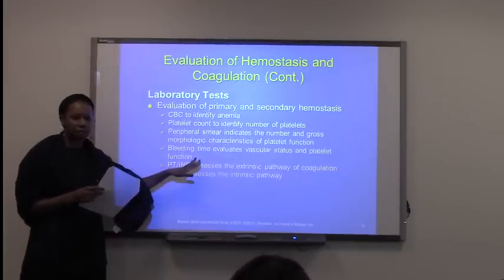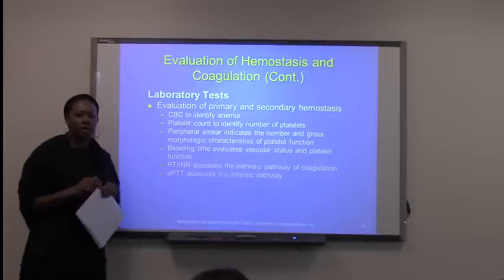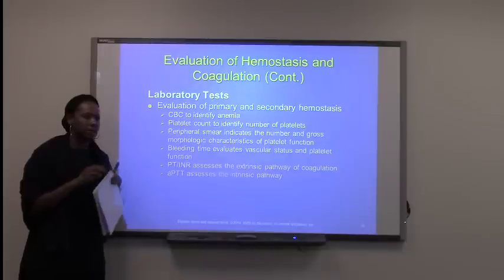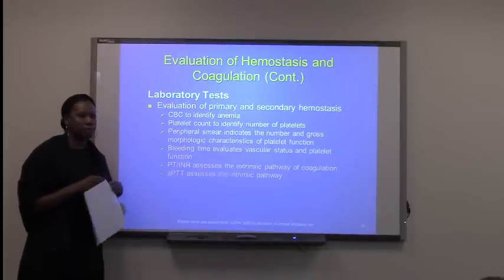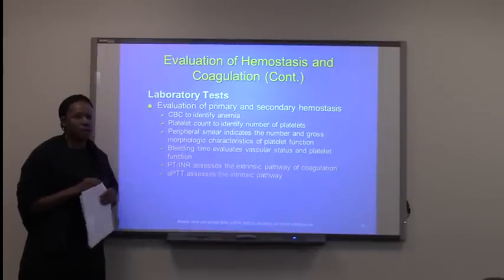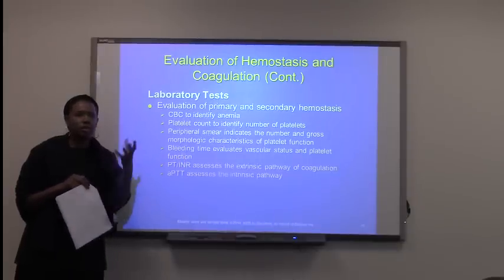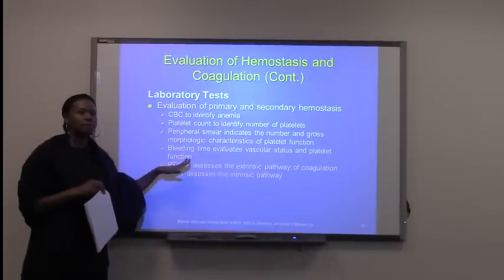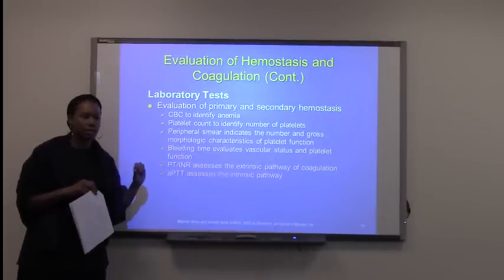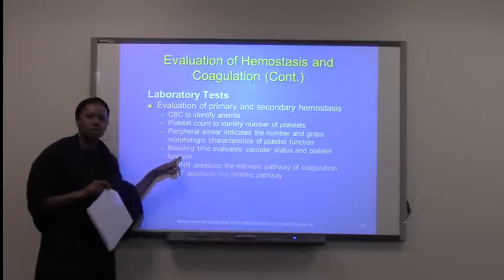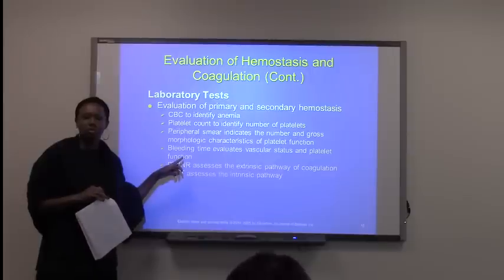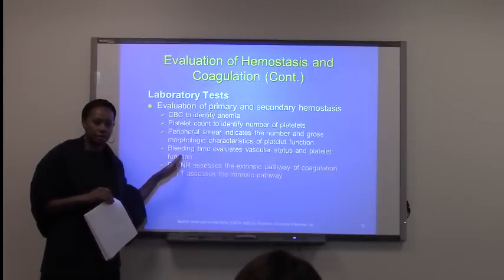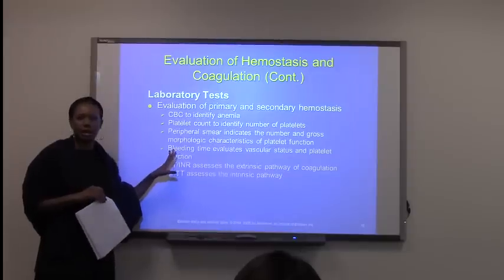Bleeding time is normal from 3 to 9.5 minutes. Bleeding time evaluates the vascular status — whether the vessel will constrict — and assesses platelet function, meaning whether platelets are rushing to the area. However, bleeding time alone cannot identify a coagulation disorder because it does not assess clotting factors.